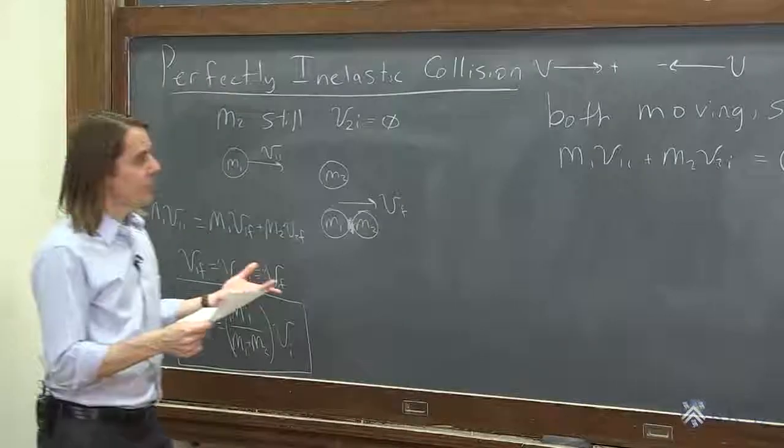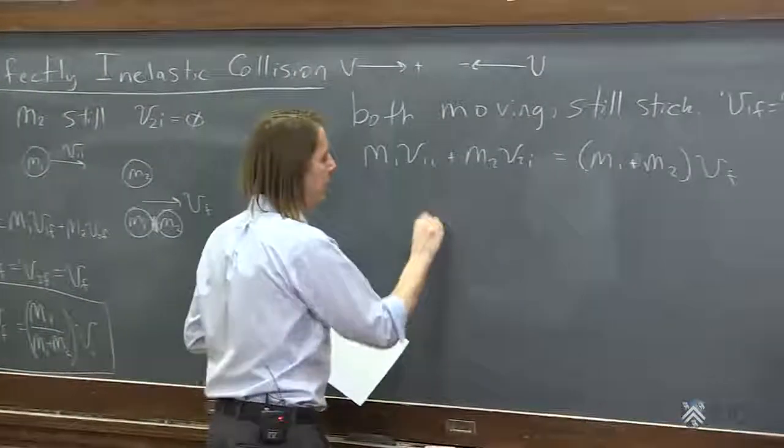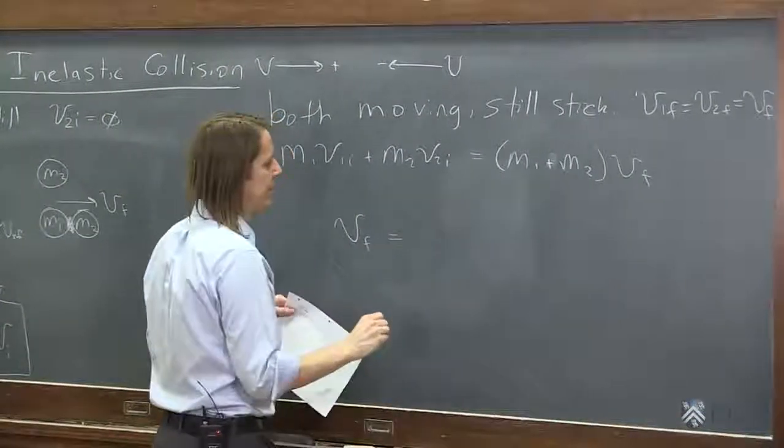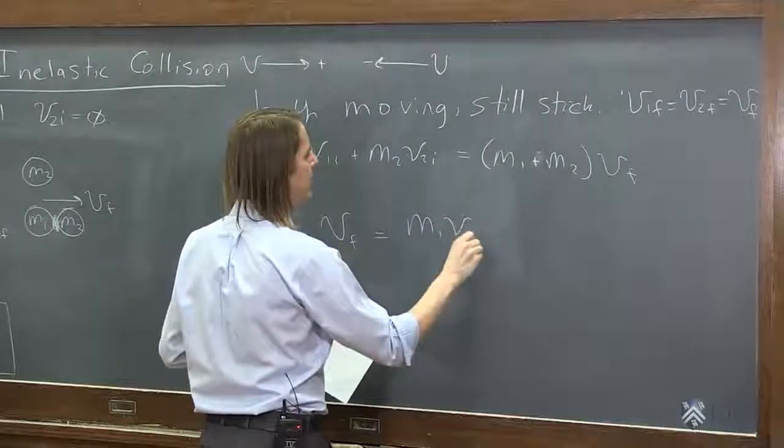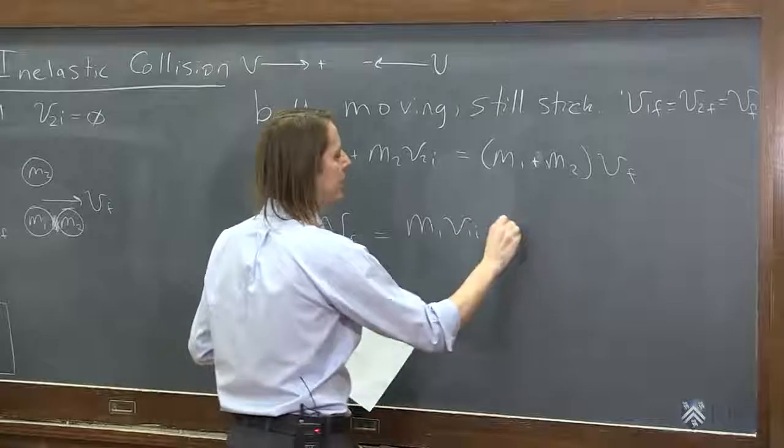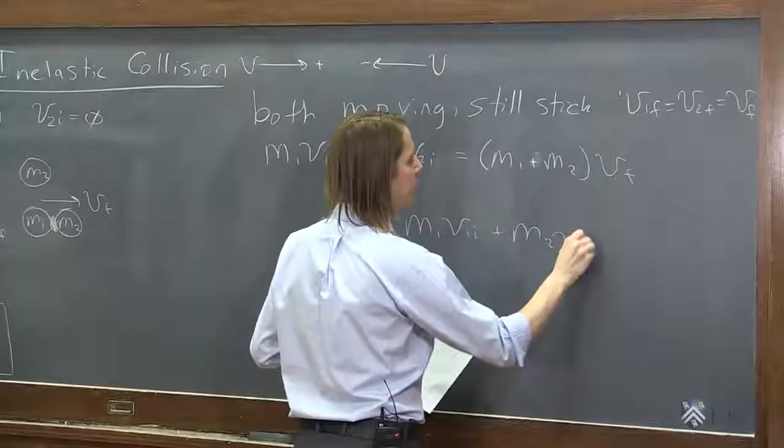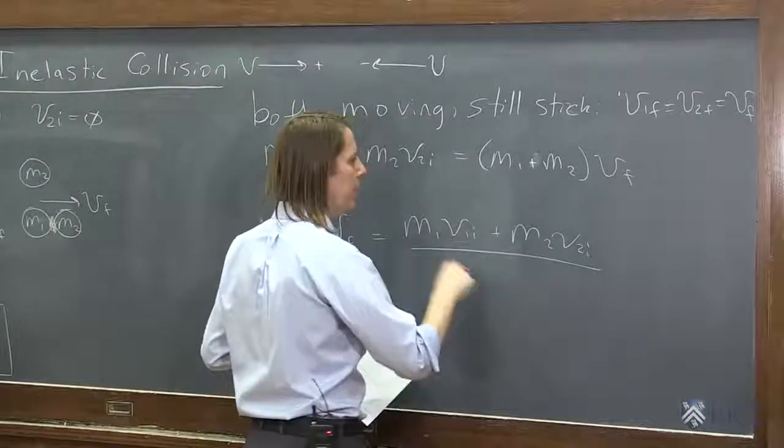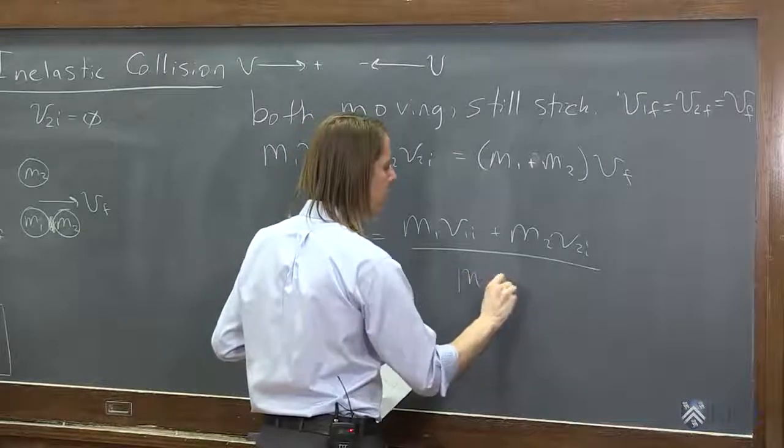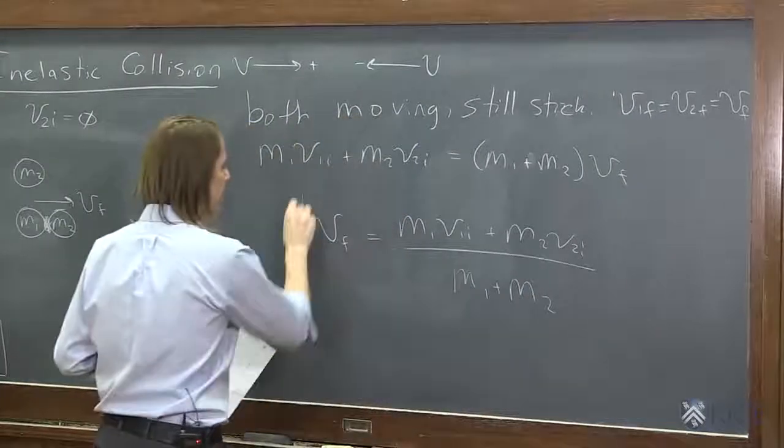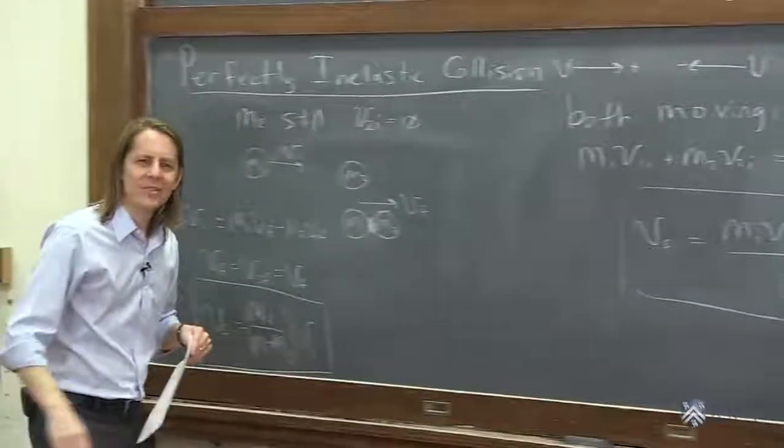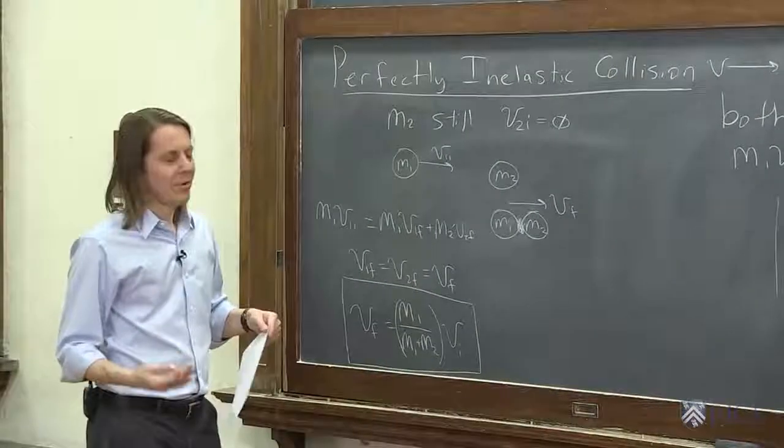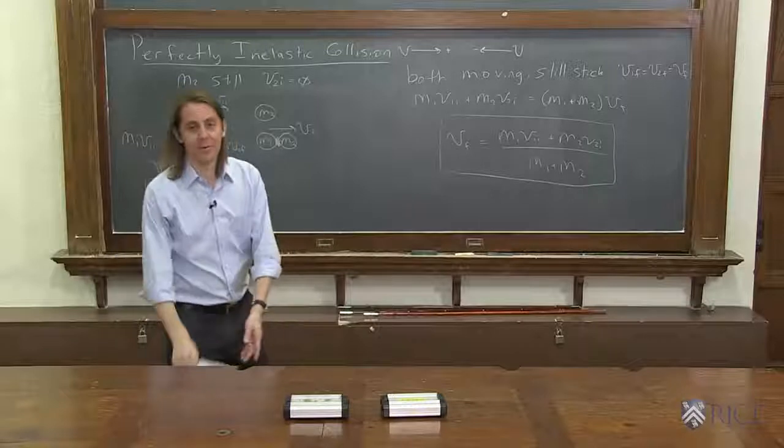So if you wanted to solve for this one, you just turn it around and you say, what's V final? It is M1 V1 initial plus M2 V2 initial over M1 plus M2. All right, and that's really it. It doesn't get super nice and clean and pretty because a lot of stuff can happen, right?